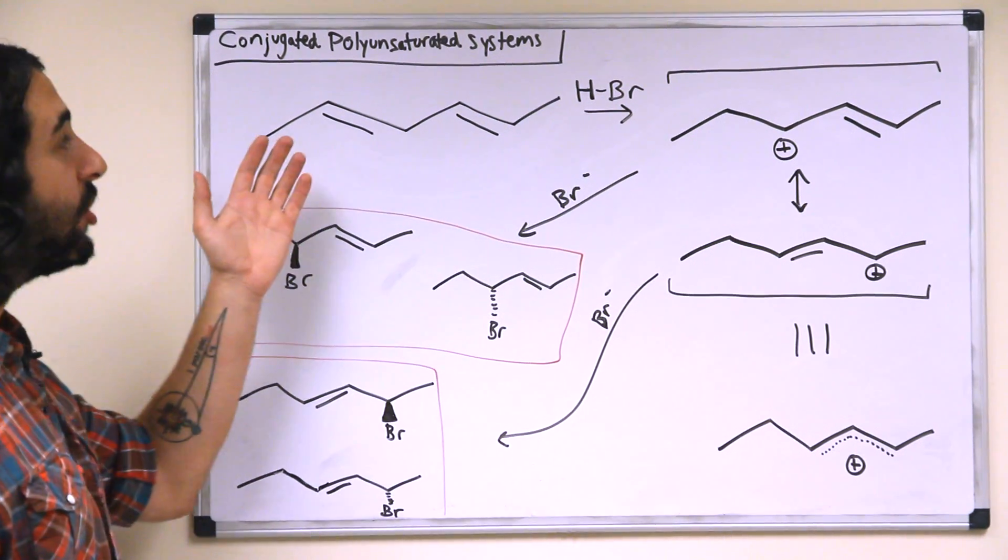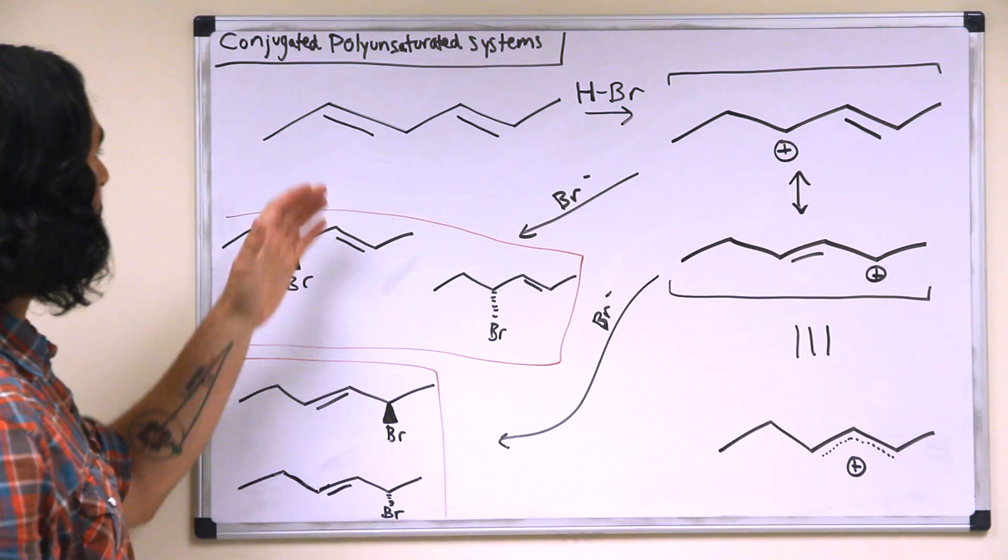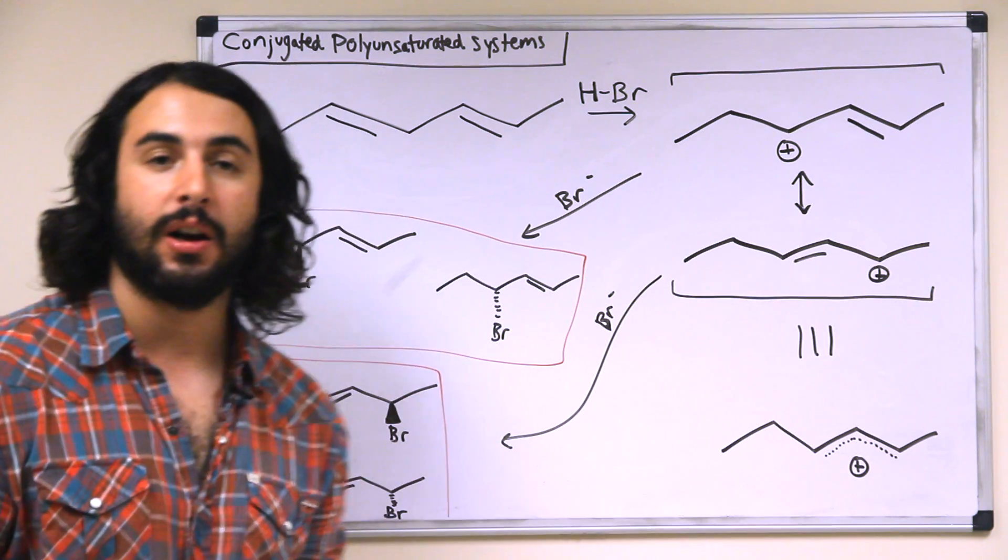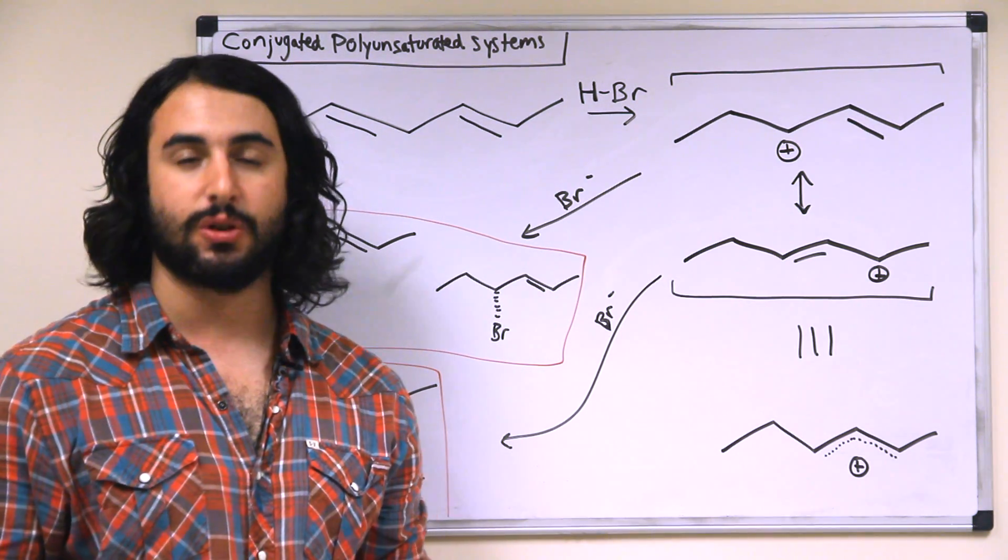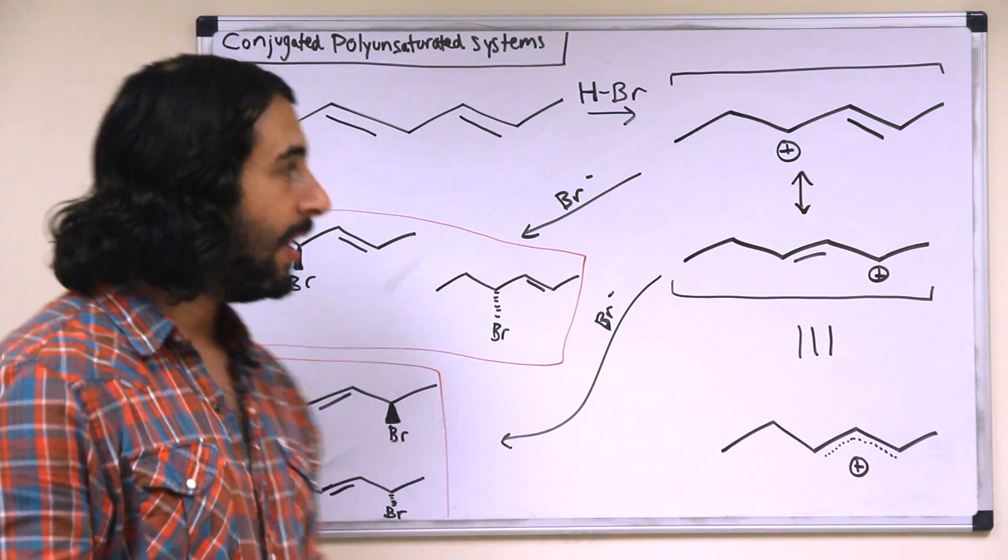Furthermore, if it is a conjugated polyunsaturated system, that means those are arranged in alternating single double, single double, single format, so that is what allows for resonance. So a conjugated polyunsaturated system is sort of a special system.